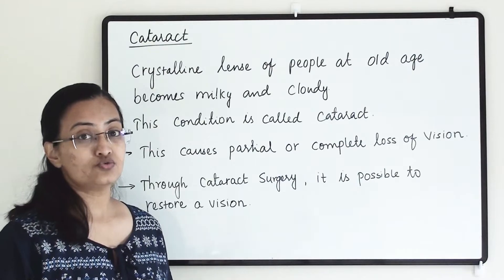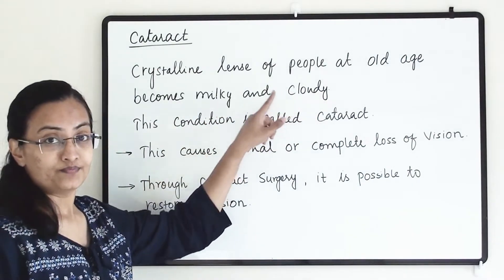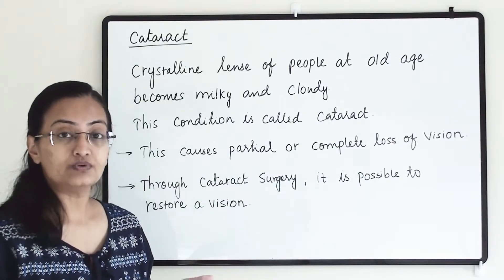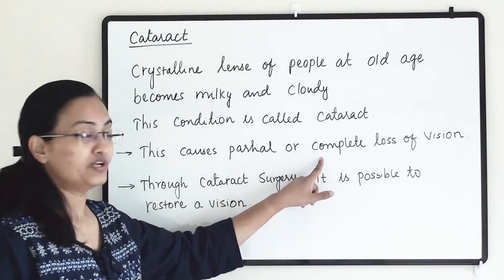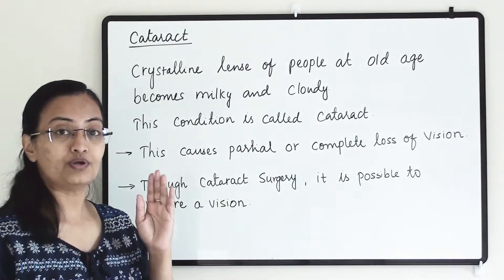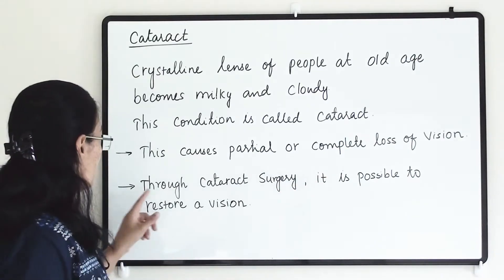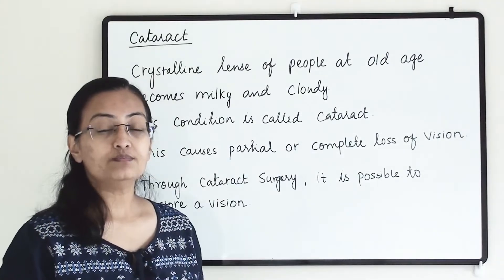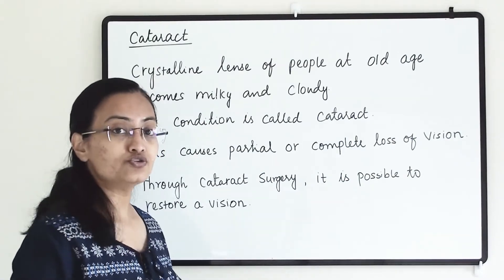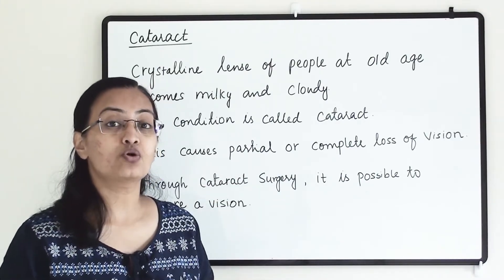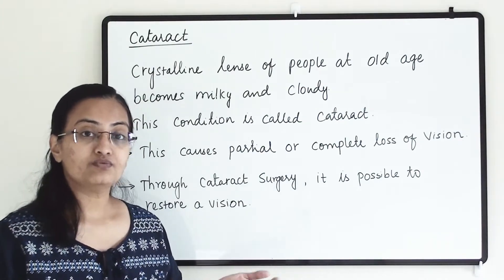Now let us see about cataract. This is a condition of the eye in which the crystalline lens of people at old age becomes milky and cloudy. Because the lens is no longer clear, this causes partial or complete loss of vision. Through cataract surgery it is possible to restore vision — the surgeon clears the cloudy lens and the person is again able to see things clearly.